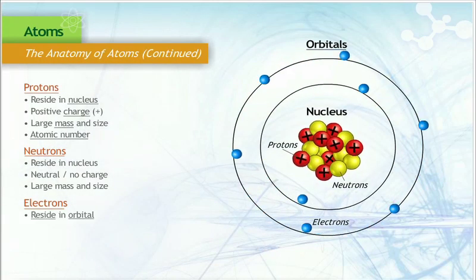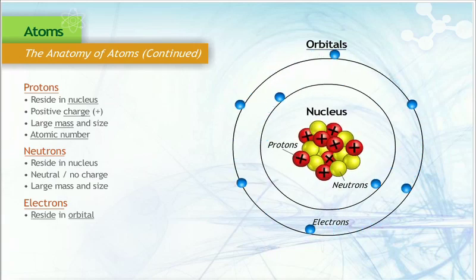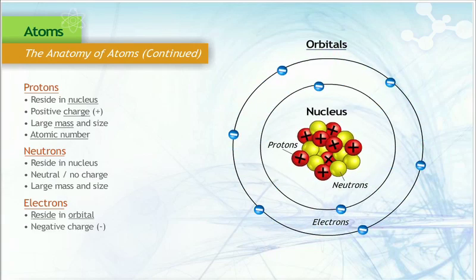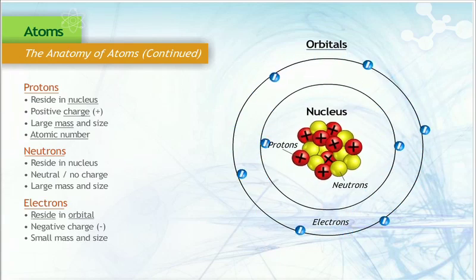Electrons rotate around the nucleus in an orbital and have a negative charge, which is visually denoted by a minus sign. They have much smaller size and mass than protons and neutrons.